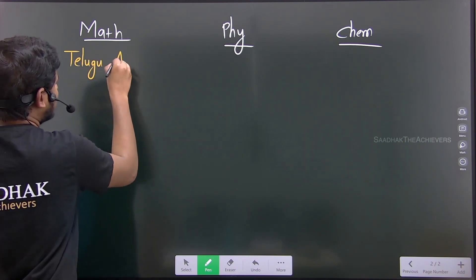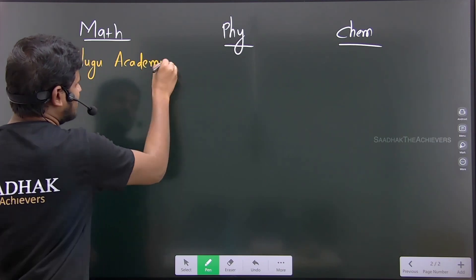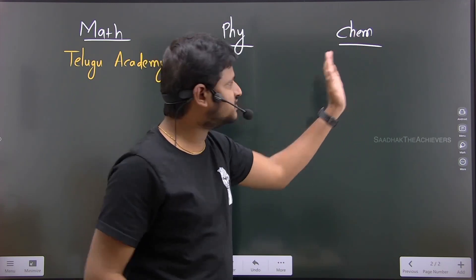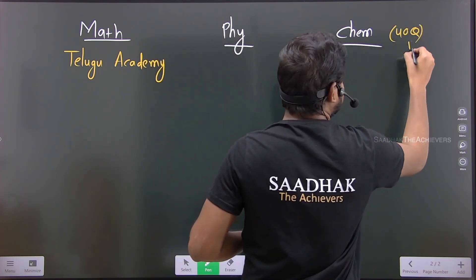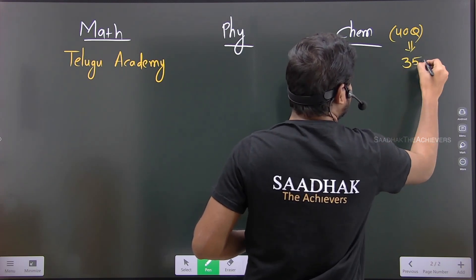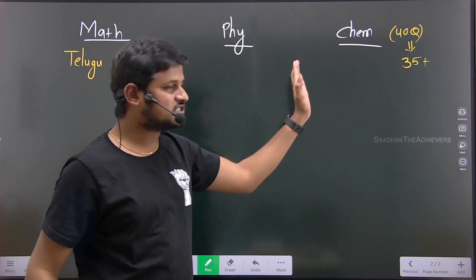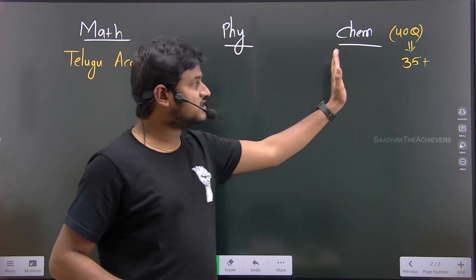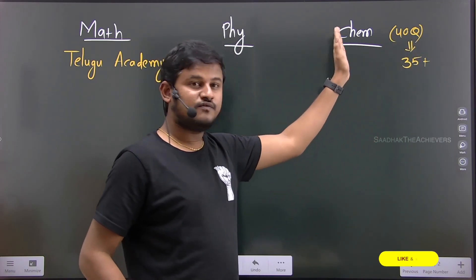For physics and chemistry, read line by line, especially chemistry. Out of forty questions, 35 plus questions are completely textbook-based. Lines are picked up from the textbook, some application-based. So 35 plus questions you can easily answer if you read the chemistry textbook line to line.